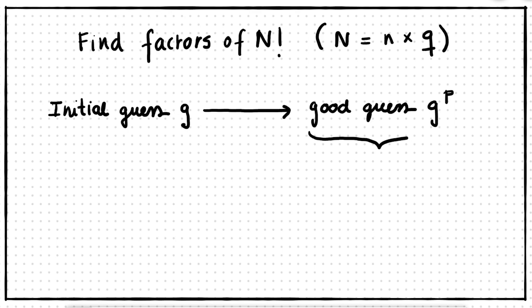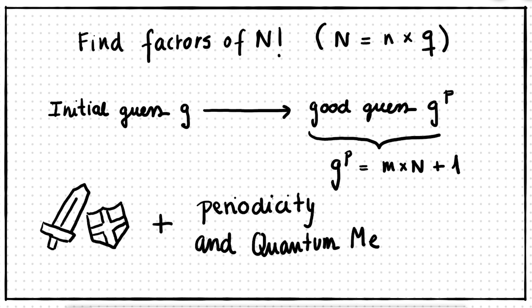We finished the last video knowing the math and the tools to find the prime factors of n, but we encountered a problem which is that in order to turn our initial random guess g into a good guess, we need to know how many times to multiply our guess by itself until we get a multiple of n plus 1. This is not an easy task to do on a classical computer.